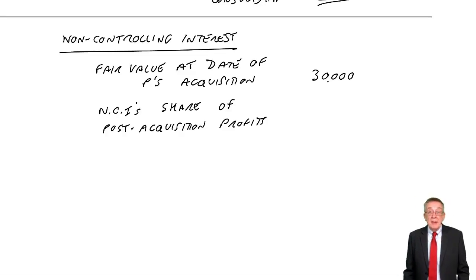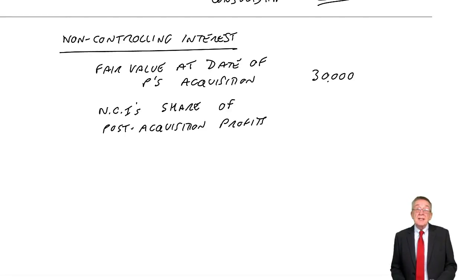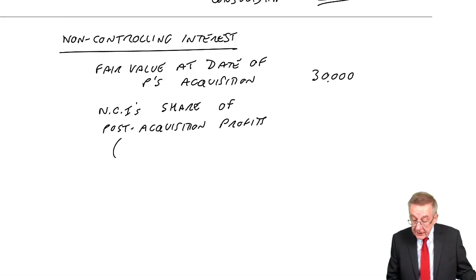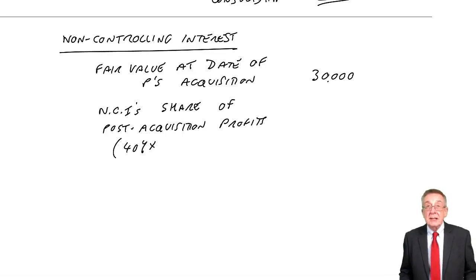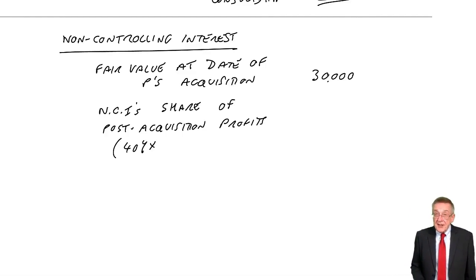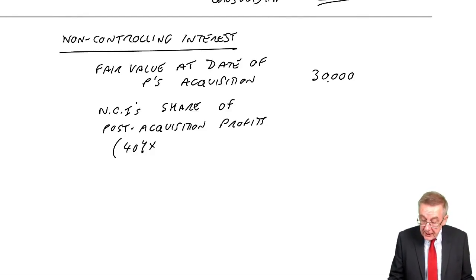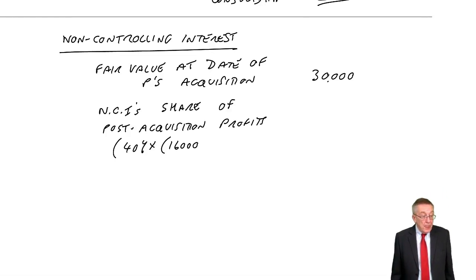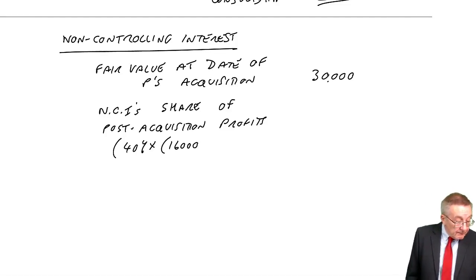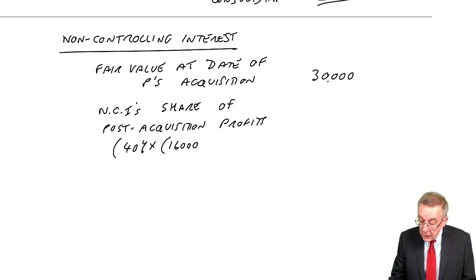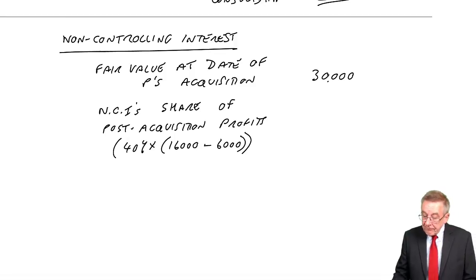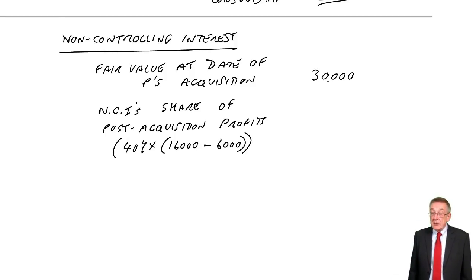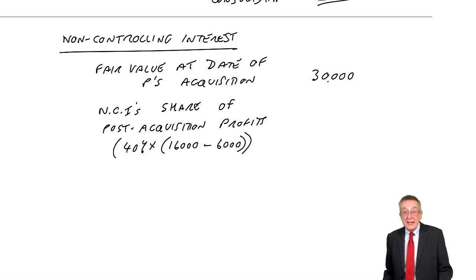However, that was the date of acquisition in 2007. We're now at 2010, and they're going to be worth more because the company has earned more since then. So we bring in the non-controlling interest's share of the post-acquisition profits. P owned 60%, the non-controlling interest owned 40%. In 2010, from the statement, the retained earnings are 16,000. At the date P acquired the shares, the retained earnings were 6,000. So S has earned 10,000 since date of acquisition, and therefore the non-controlling interest are entitled to 40% of that 10,000.